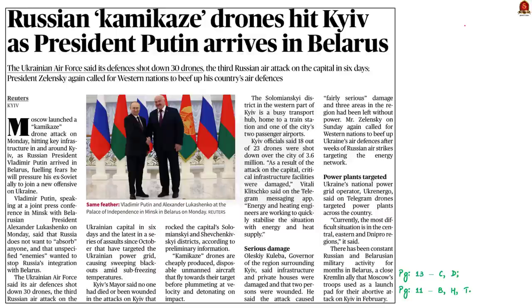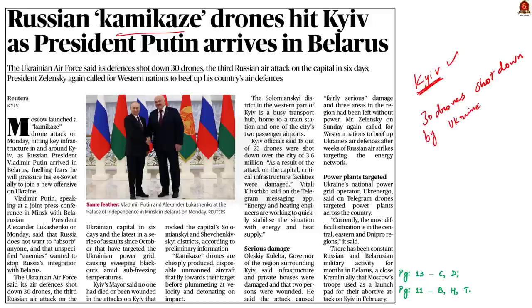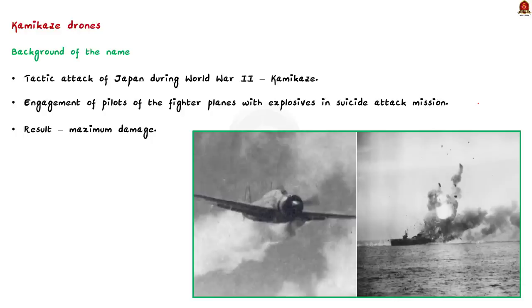This article says that Moscow launched a kamikaze drone attack on Ukraine. Ukraine said the drones attacked key infrastructure located in and around the capital city Kyiv. According to the Ukrainian Air Force, its air defenses shot down 30 drones, and it is the third Russian air attack on the Ukrainian capital in six days. The name kamikaze is derived from a tactic adopted by Japanese during World War II, in which pilots of fighter planes with explosives would intentionally crash into an enemy target to cause maximum damage. This type of attack is termed a kamikaze attack.